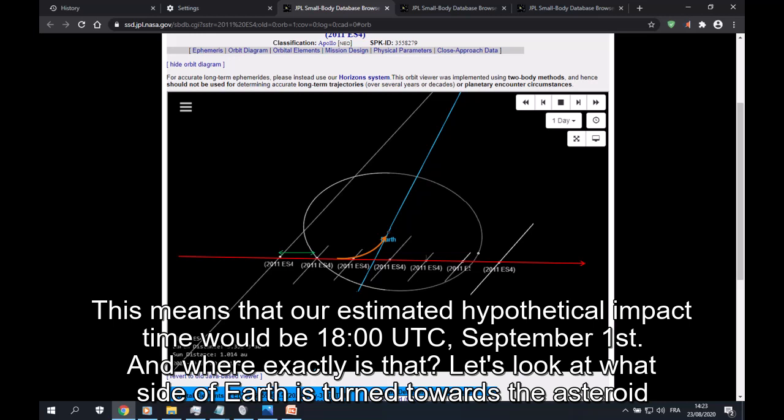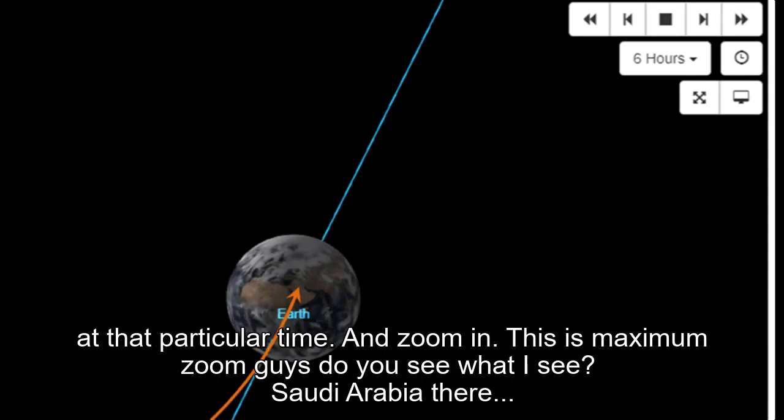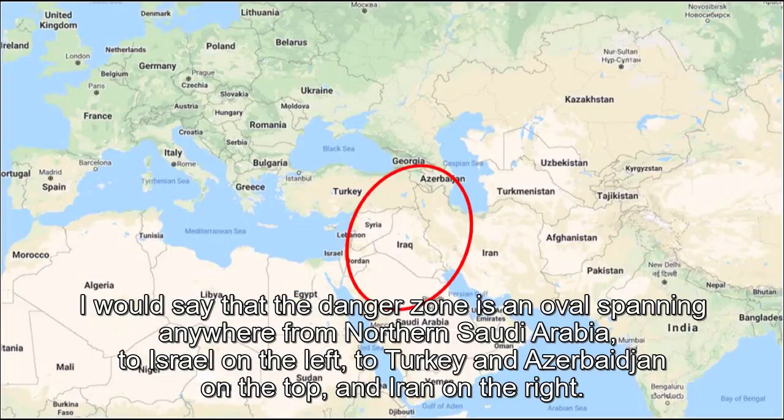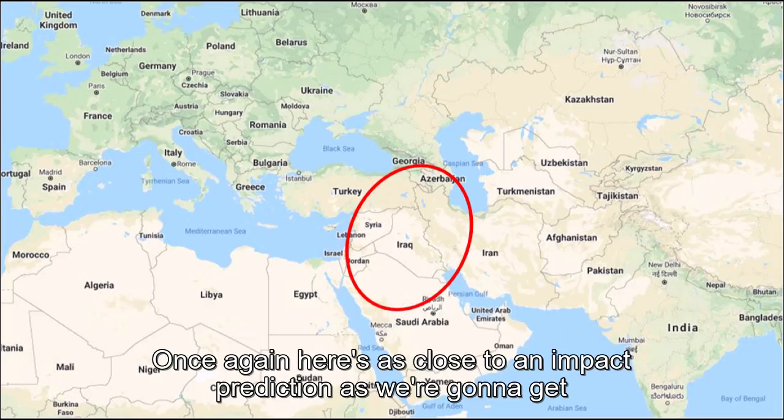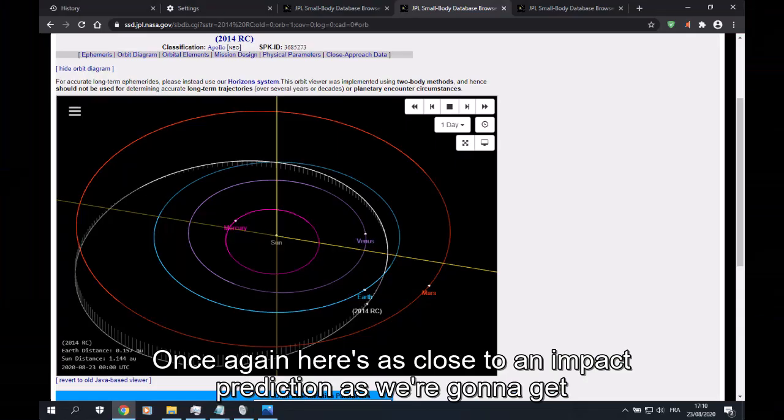Let's look at what side of Earth is turned towards the asteroid at that particular time. And zoom in. This is maximum zoom, guys, do you see what I see? Saudi Arabia there. I would say that the danger zone is an oval spanning anywhere from northern Saudi Arabia to Israel on the left, to Turkey and Azerbaijan on the top, and Iran on the right. Once again here's as close to an impact prediction as we're gonna get.